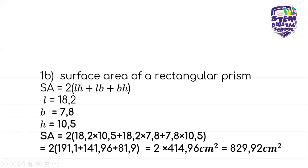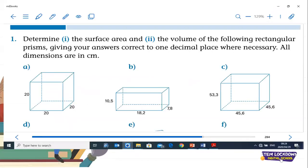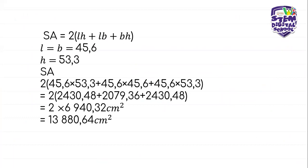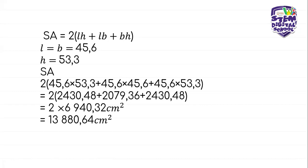Now we can look at the last one, C. The length equals the breadth, both of which are 45.6 centimeters, and the height is 53.3 centimeters. Using the formula SA equals 2 into LH plus LB plus BH, and substituting correctly, you will be able to see that the surface area is 13,880.64 square centimeters.